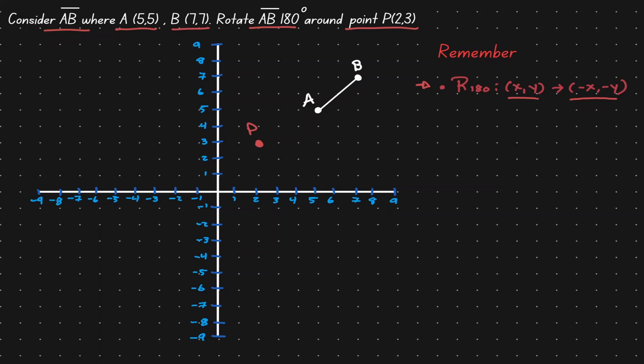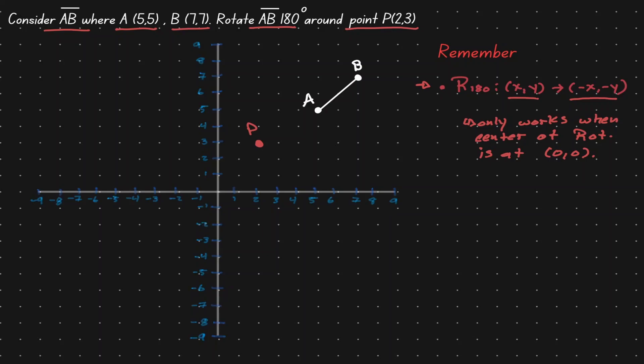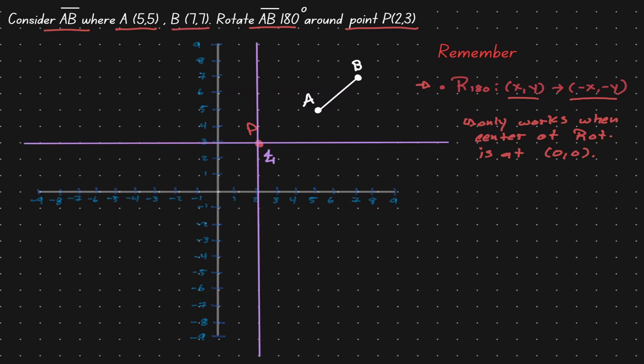But this rule only works when the center of rotation is at the origin (0, 0). Notice that it's not the case right now — the center of rotation is at (2, 3). So one way that we can make this formula work is to redefine our coordinate plane. Let's draw some new axes and make the center of those axes to be at the center of rotation, at (2, 3).